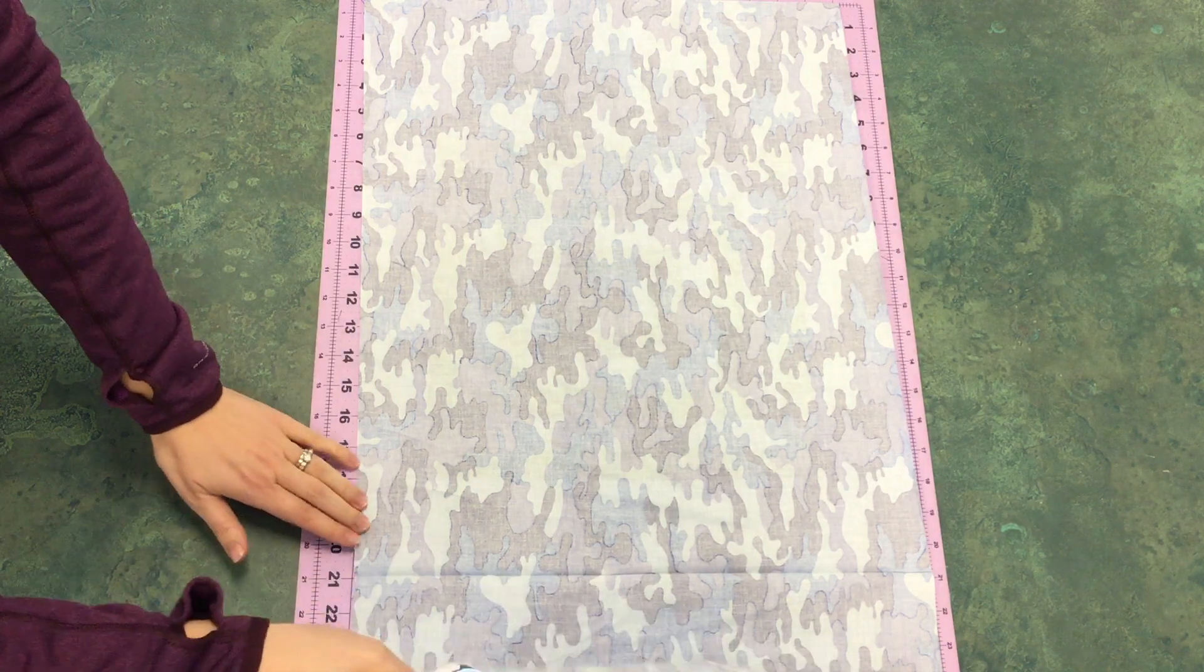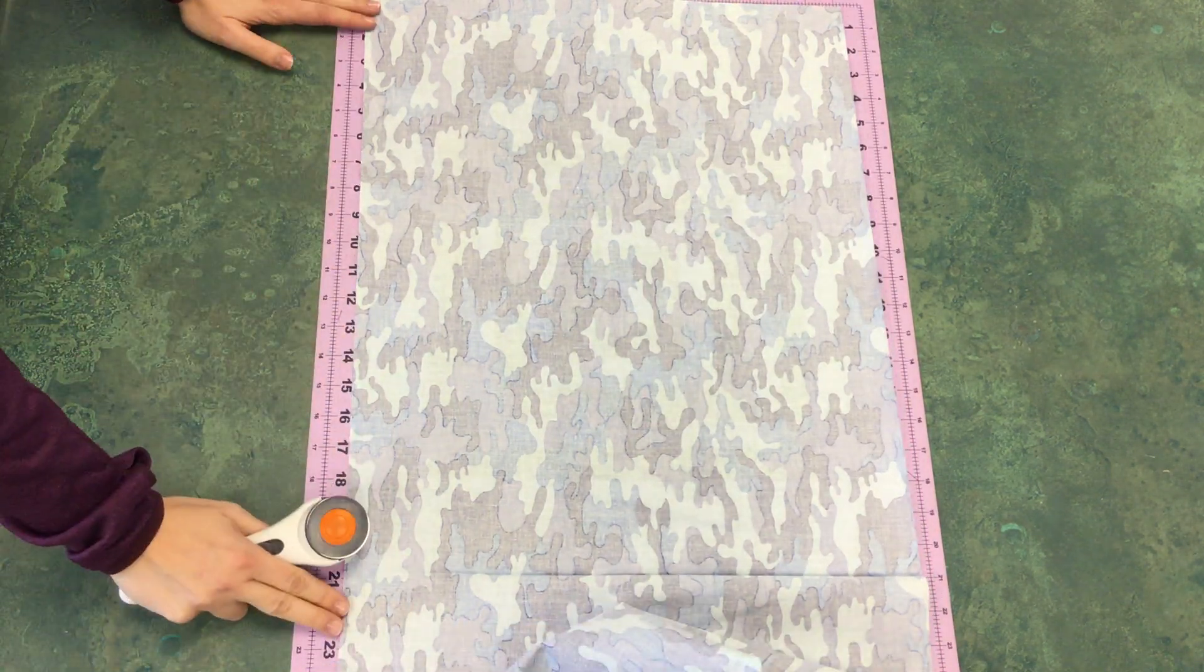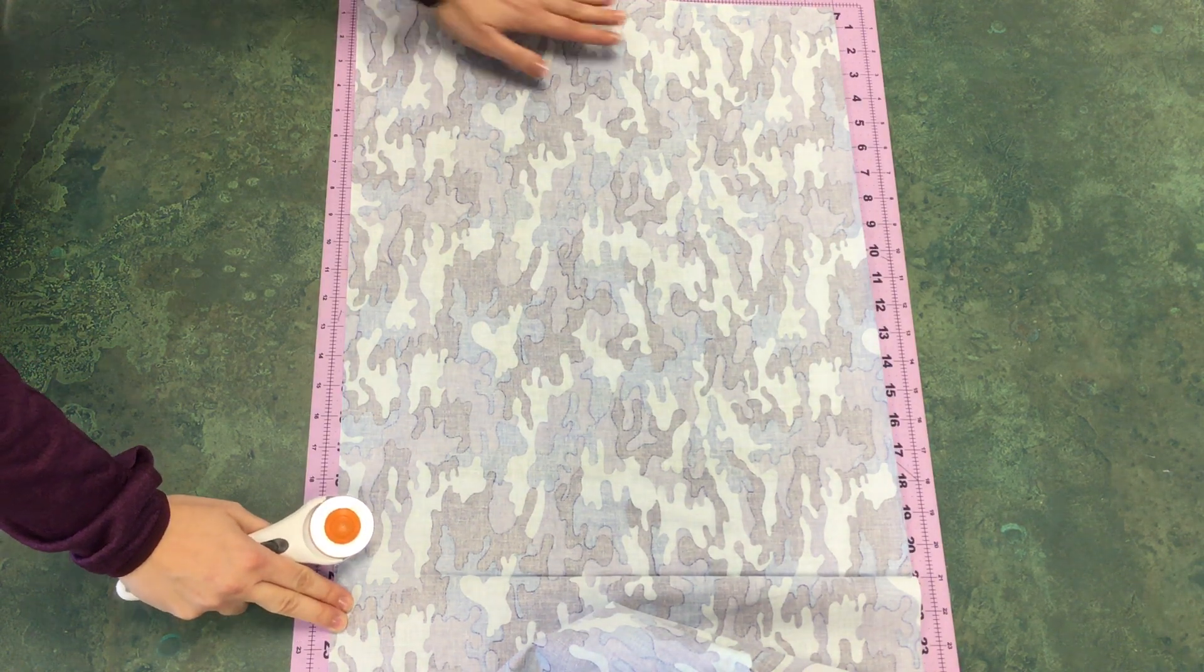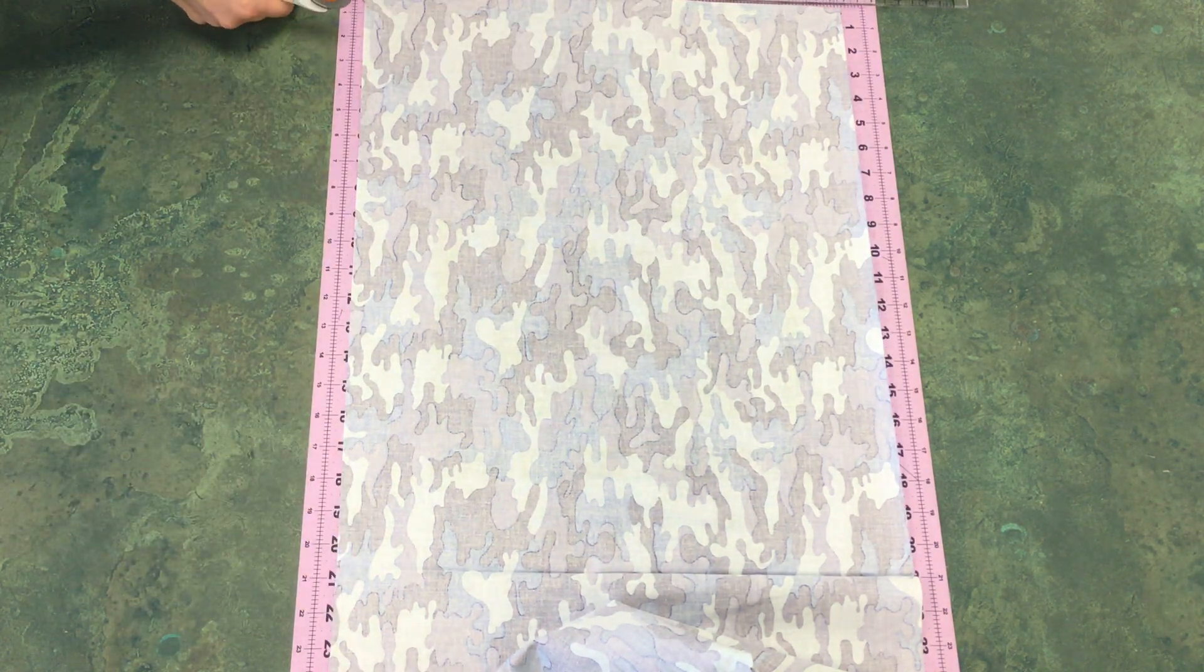It says in our instructions that we need to cut a piece 11 by 17 and a piece that's five and a half by five. I'm going to straighten out this edge.